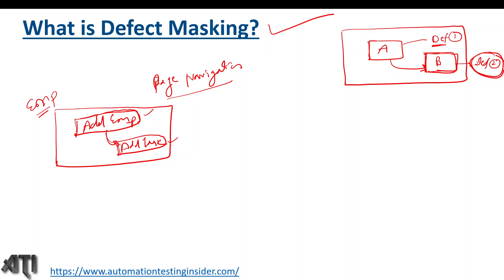So whatever defects exist on the Add Task page will go unnoticed — we cannot execute the functionality related to the Add Task page. This is another example of defect masking or mask defect.